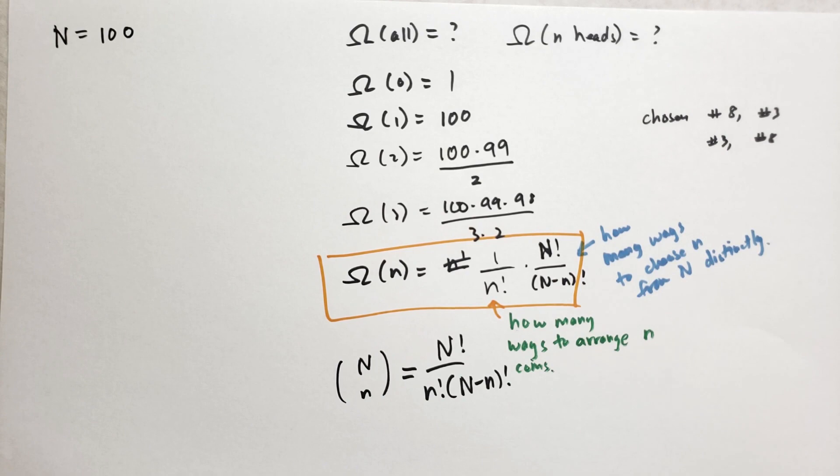Now if you were dealt those five cards, you could have been dealt them in any order. For instance, you could have gotten ace, king, queen, jack, and 10. Or maybe you got king, queen, jack, 10, ace. Or maybe king, ace, queen, jack, 10. Anyway, there's a number of ways that you could have gotten those cards dealt.